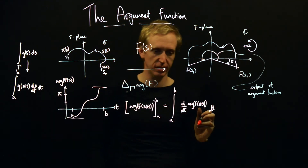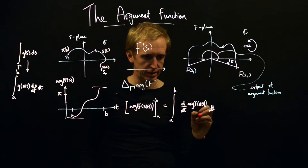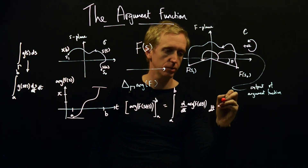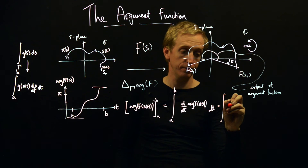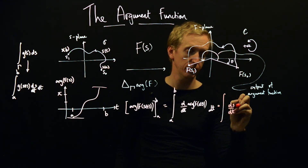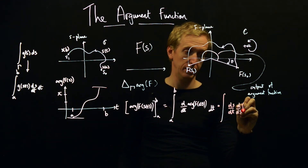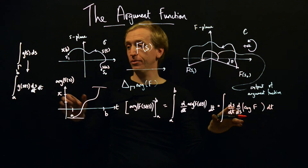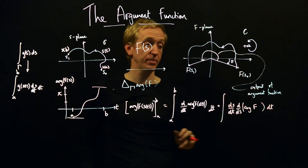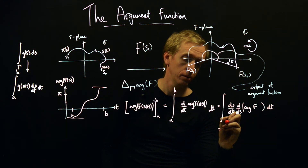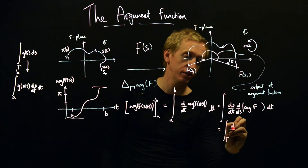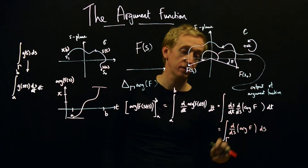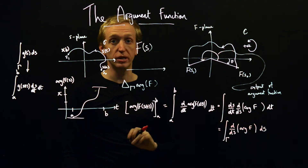Let's massage this further. We insert DS DT, and we end up with an integral involving D arg of F of S of T times DS DT DT, with the argument of F of S of T written accordingly. Things are now basically in the right form and we can turn this into a normal-looking contour integral: the integral of D by DS of the argument of F, times DS. This is actually the definition given in your notes.